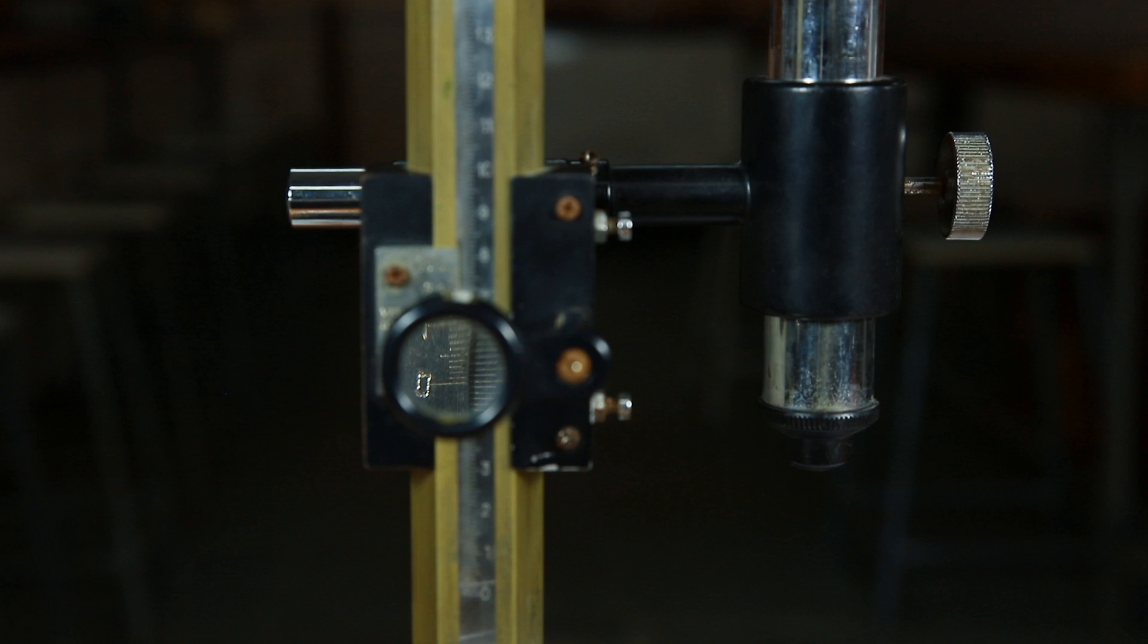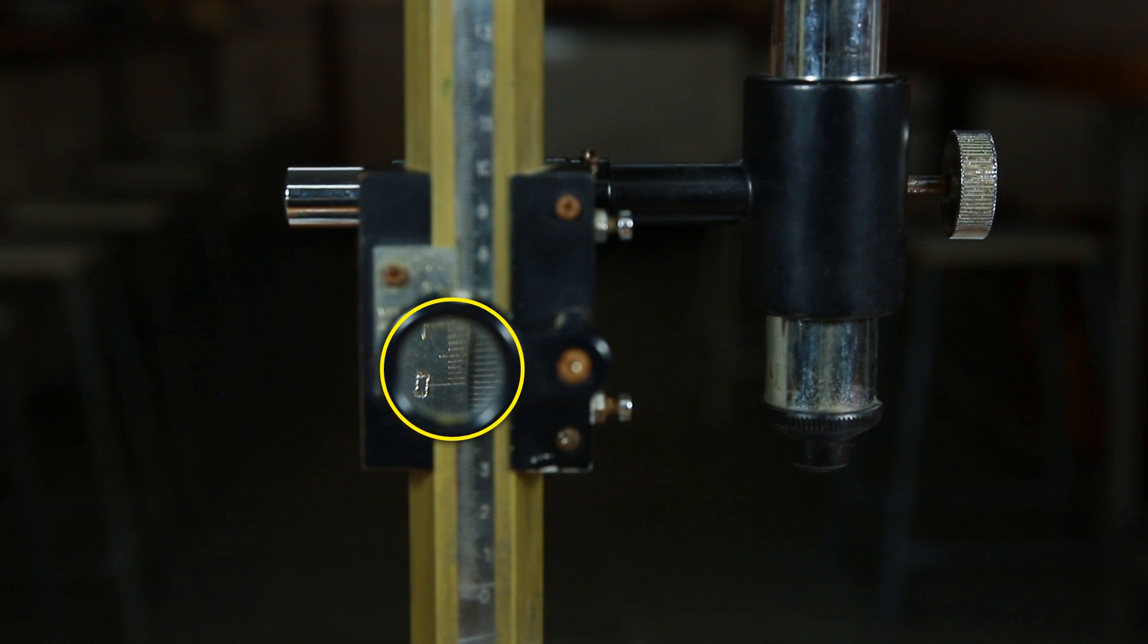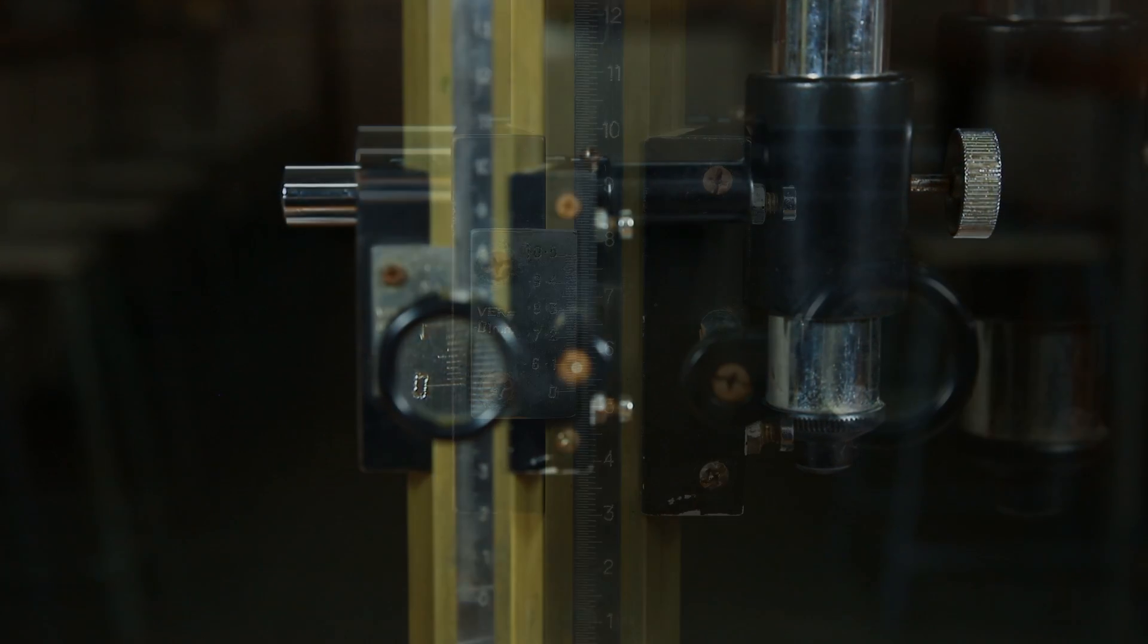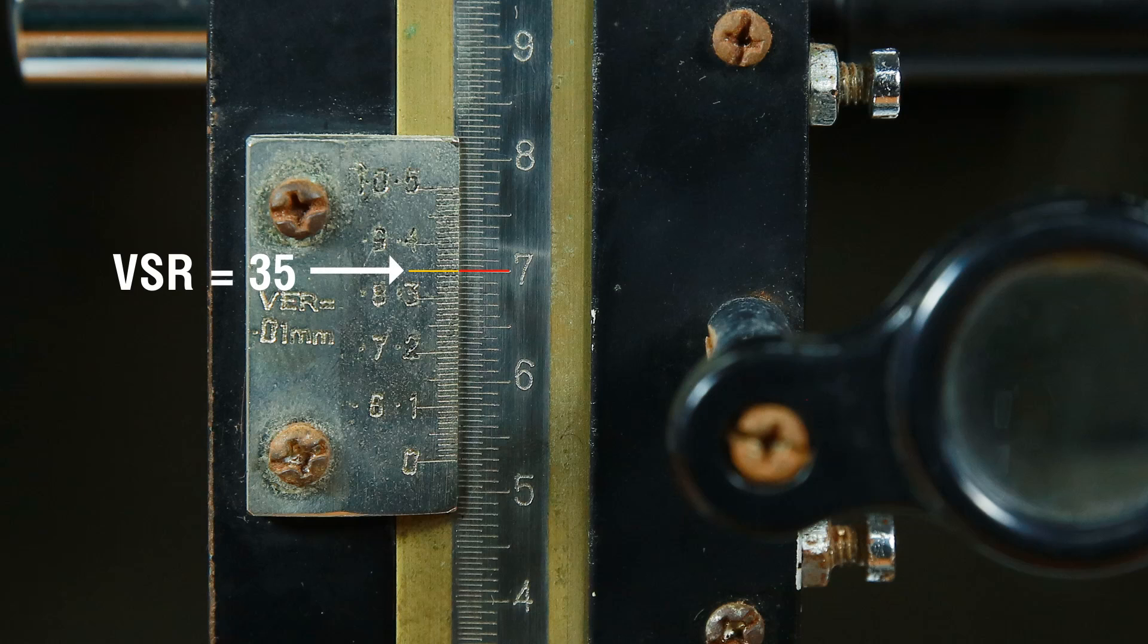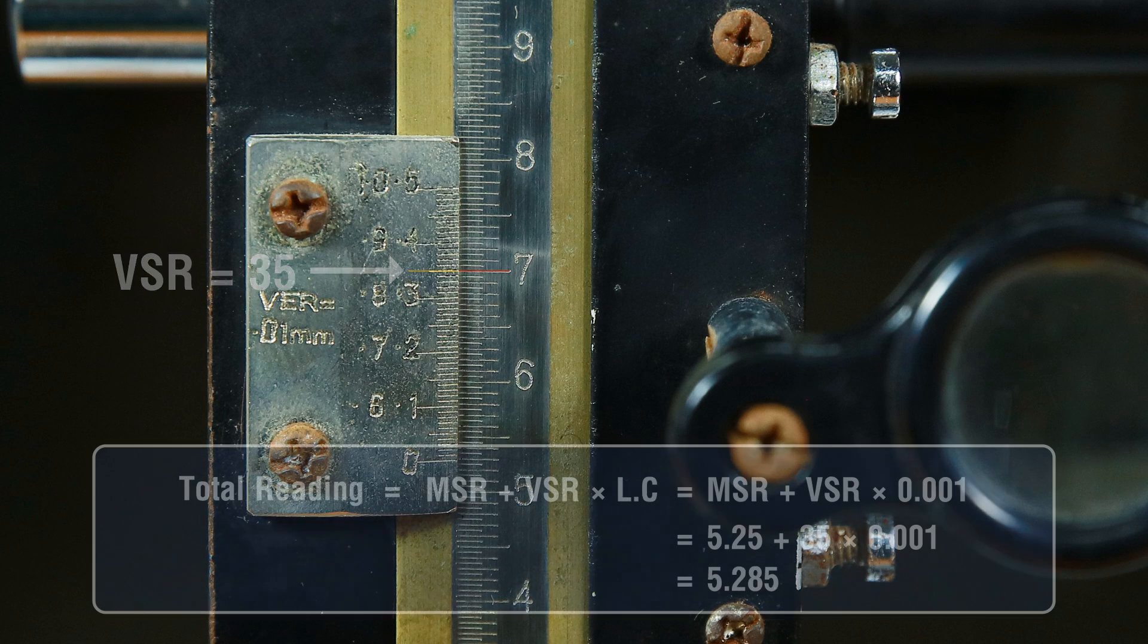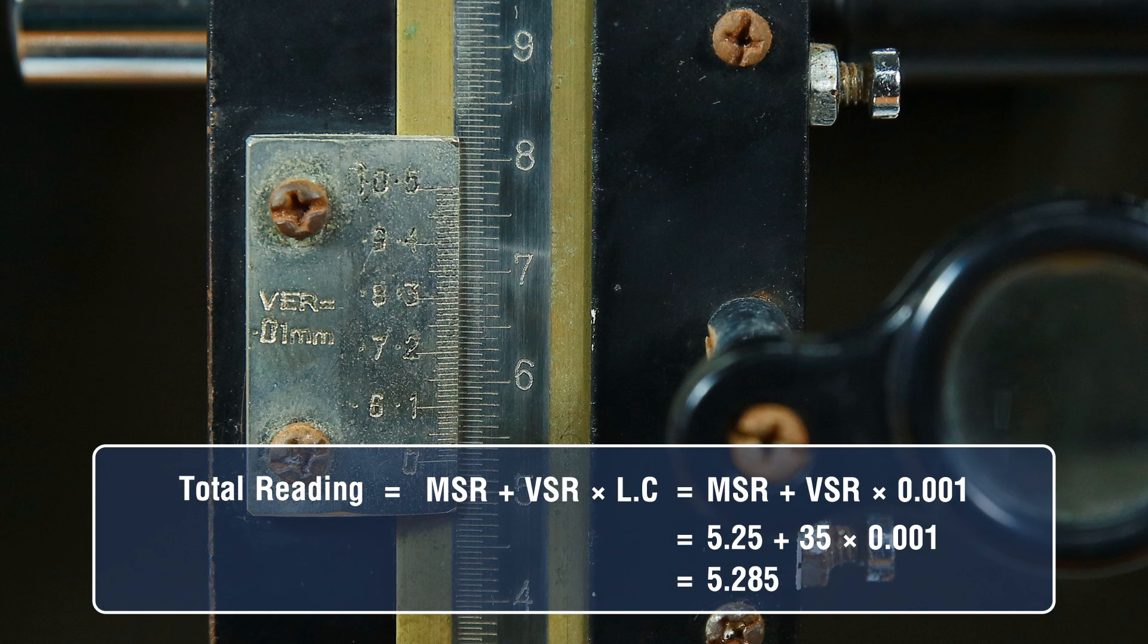Use the magnifying lens attached to microscope and note the vernier scale division that coincides with the division of the main scale as the vernier scale reading VSR. Now, calculate the total reading of microscope R1.